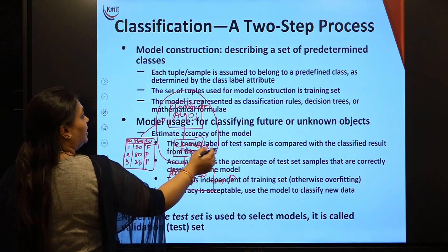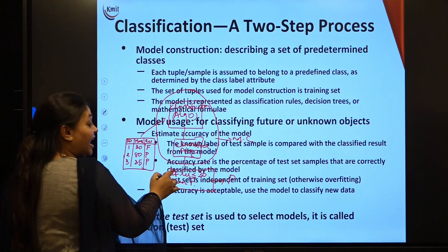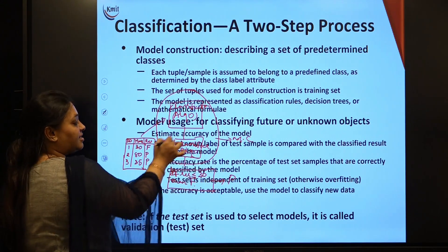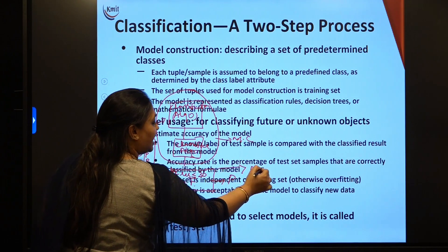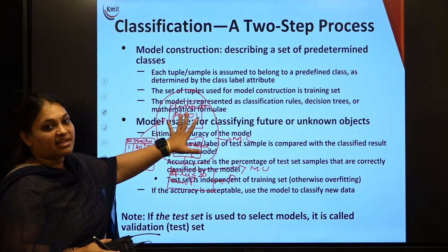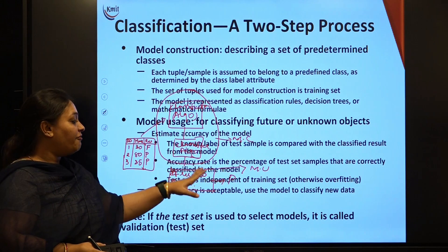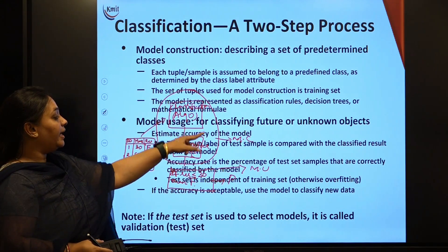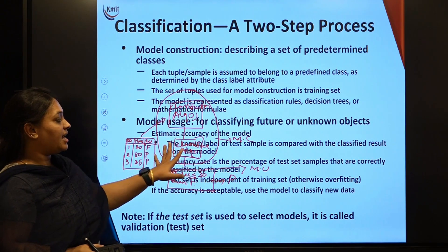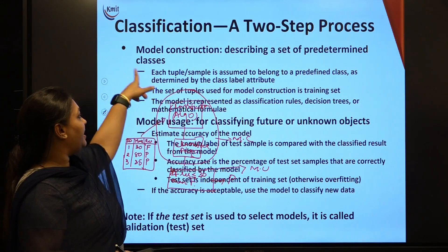This complete structure — taking the training dataset, applying classification, running the classifier algorithm, and checking the conditions — this part is called model construction. The conditions and the purpose for which I am using the algorithm is called model usage. So constructing the classification is model construction; using it to perform the task is model usage.